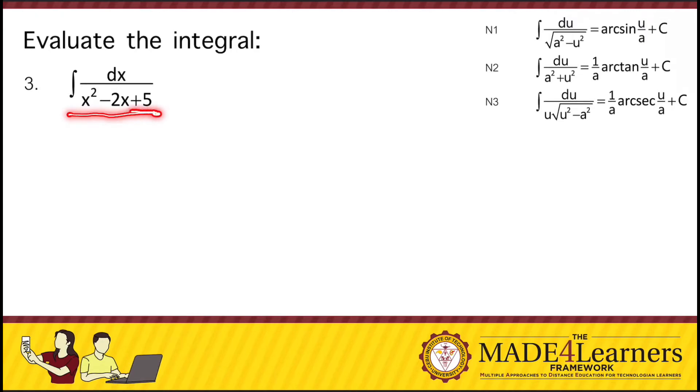In this case, we have a trinomial in the denominator. But as you can see, in the patterns here, among the three patterns, there is no trinomial in the denominator. So most of the time, if we see patterns like this found in an integral in the denominator, what we're going to do is form a perfect square trinomial by completing the square.